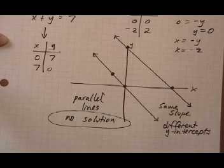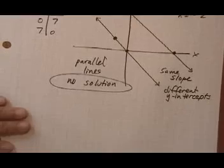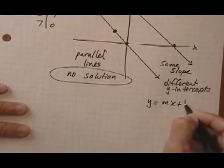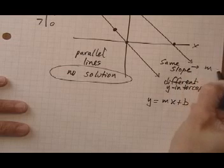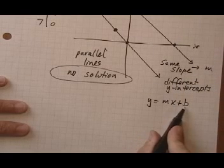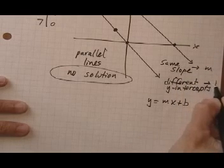Now, if you remember from the slope-intercept form of the equation, y equals mx plus b. Alright, same slope would mean the m values are the same. Different y-intercepts would mean the b values are different.